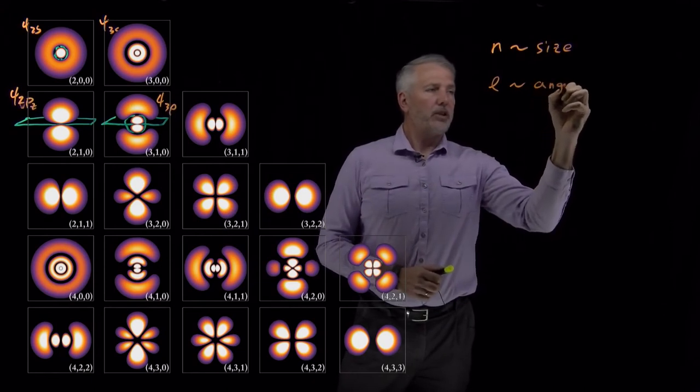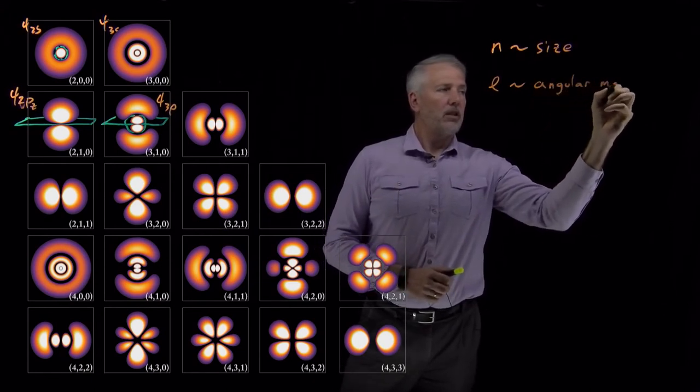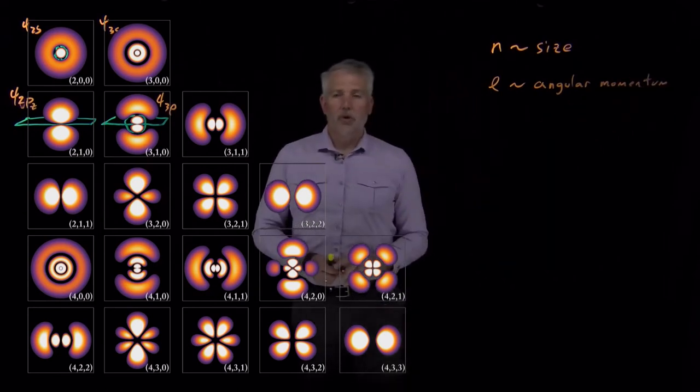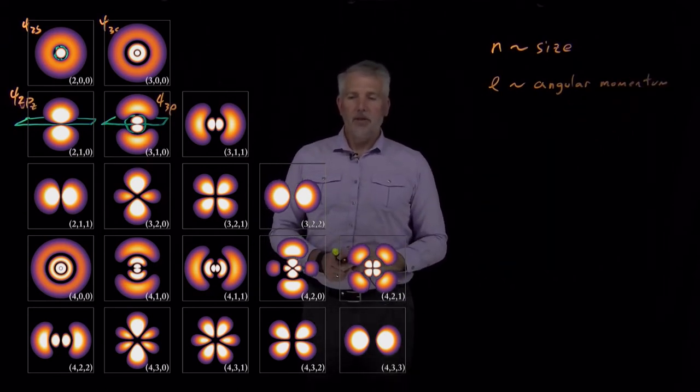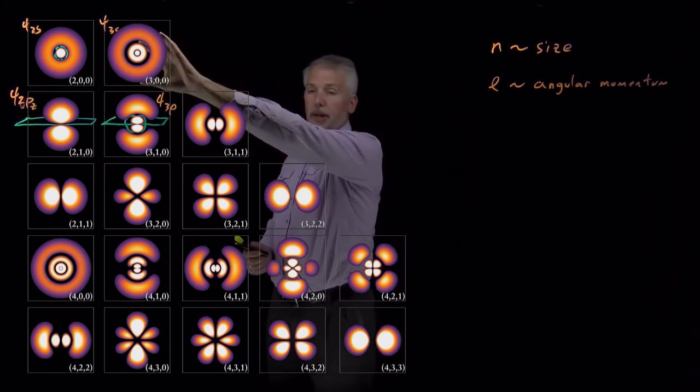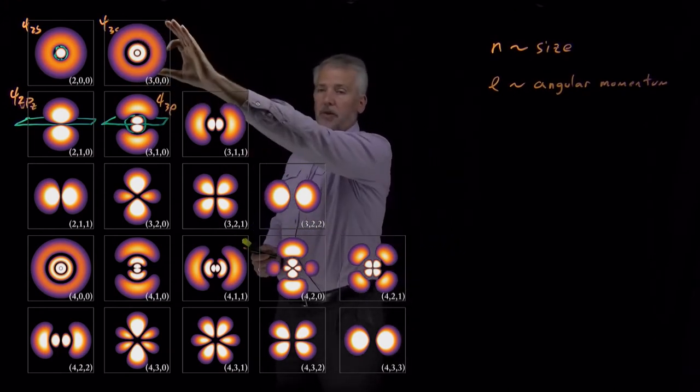So what l is really telling us is the angular momentum of the orbital. And what that means in a quantum mechanical sense, if an orbital has no angular momentum, it behaves in this spherical manner, it occupies a spherical orbital.